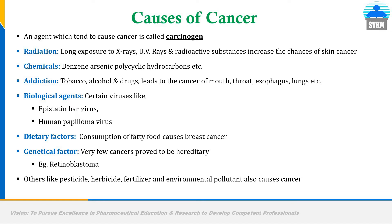Biological agents include Epstein-Barr virus and human papilloma virus; because of these agents, certain sorts of cancers have been observed. Dietary factors: consumption of fatty food leads to breast cancer in women. Genetic factors: very few cancers are reported to be hereditary, but still 5–10% of cancers are hereditary — for example, retinoblastoma. Other agents like pesticide, herbicide, fertilizer, and environmental pollutants also cause different cancers.